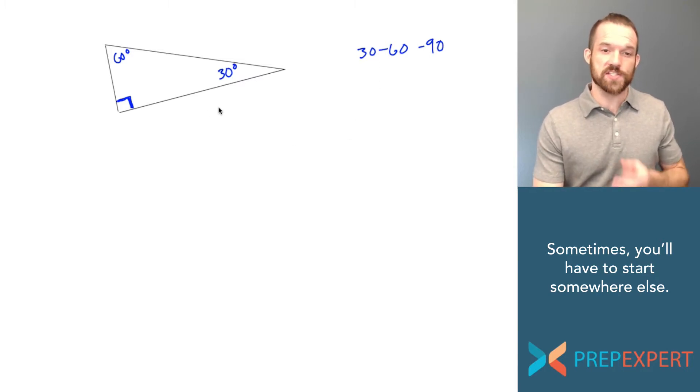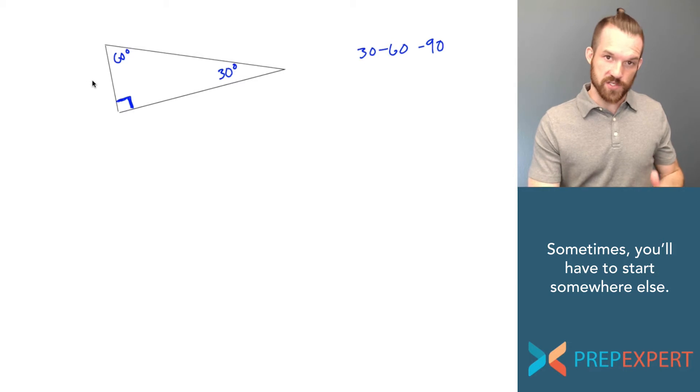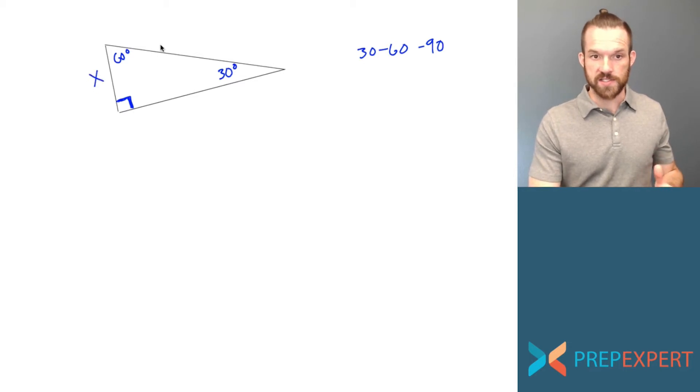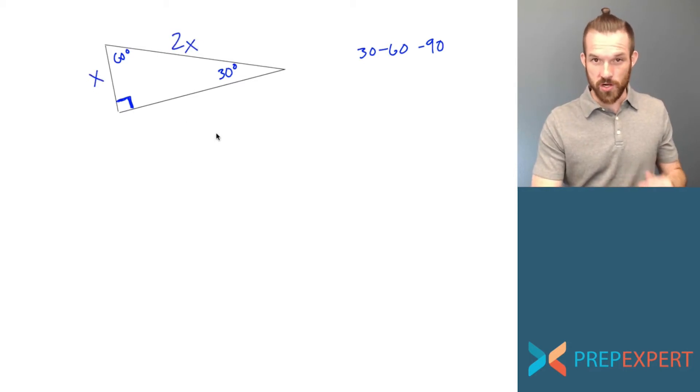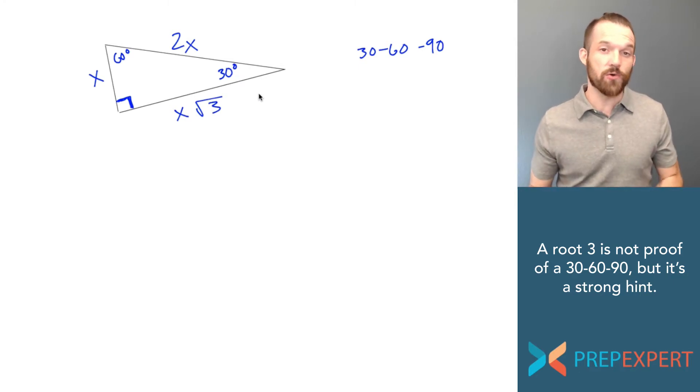What you need to know about a 30-60-90 triangle especially is the relationship of its side lengths. The smallest side, if we call it x, then the hypotenuse is 2x and the long side that is not the hypotenuse is x root 3. This information is actually given to you on the formula page of the SAT, so you don't necessarily have to memorize it, but I think it's a good idea. If you have to look back to the formula page on test day, you might be in trouble. You should be comfortable enough that you know them.